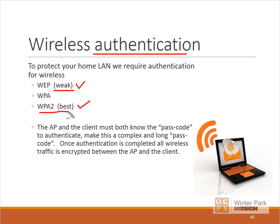These authentication and encryption protocols are very complex. Just understand which ones are weak and which are the best standards. The access point and the client — your Android phone, tablet, or laptop — both must know the passcode that is shared between the two. This allows you to authenticate. Always make this passcode complex and long with many characters. Once authentication is complete, all wireless traffic is encrypted between the access point and the client.